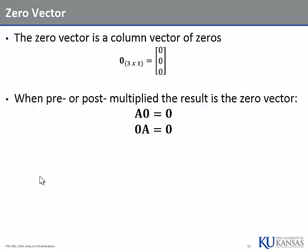The zero vector is literally a column vector of zeros. The number of rows depends on what you're multiplying it by, and you may need to take its transpose. It works the same as zero in regular algebra: any number times zero is zero. Nothing from nothing leaves nothing.